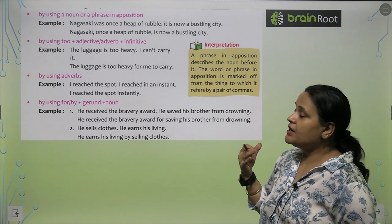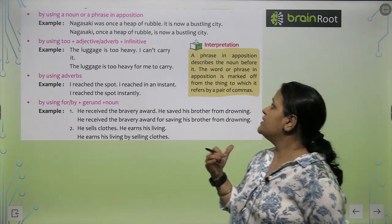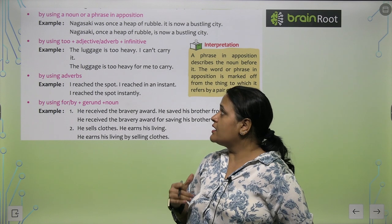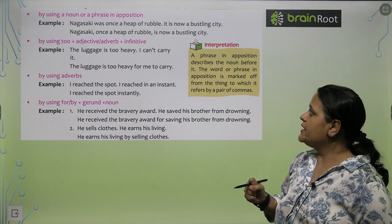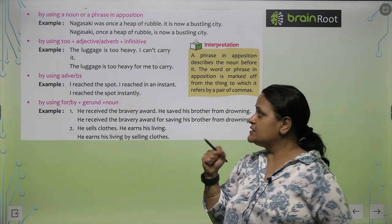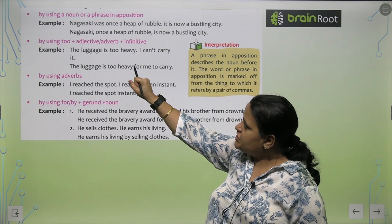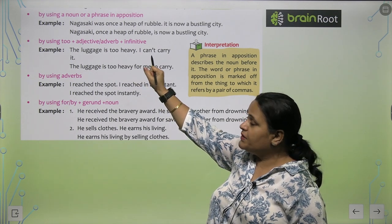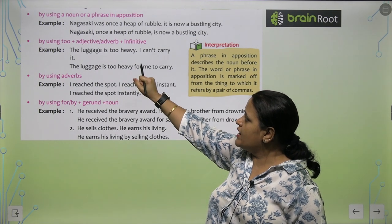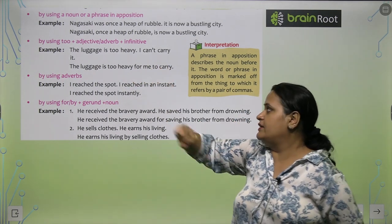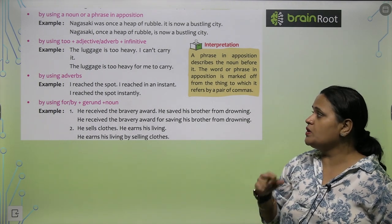By using a noun or a phrase in apposition — for example: 'Nagasaki was once a heap of rubble. It is now a bustling city.' Combined: 'Nagasaki, once a heap of rubble, is now a bustling city.' By using 'too + adjective/adverb + infinitive' — for example: 'The luggage is too heavy. I can't carry it.' Combined: 'The luggage is too heavy for me to carry.'